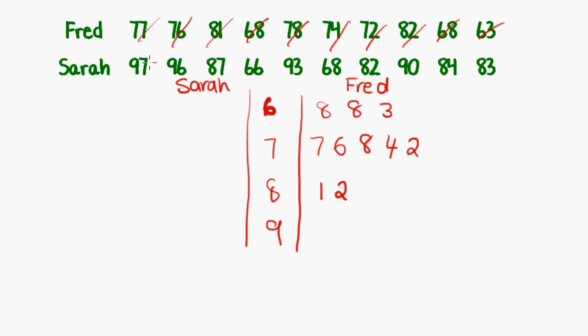Okay, so Sarah's results. She had a 97, a 96, an 87, a 66, 93, 68, 82, 90, so 9, 0, 84 and 83.